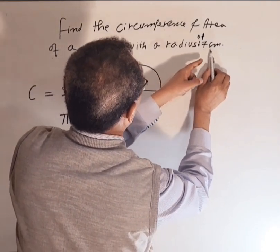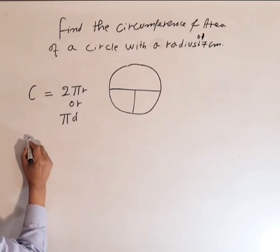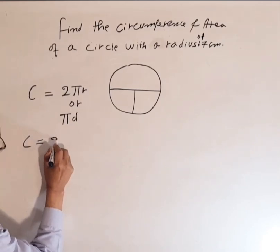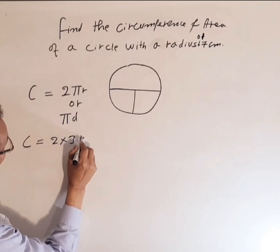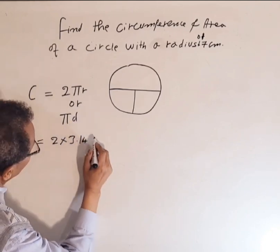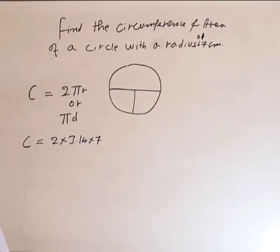So let's do them: C equals 2 times 3.14 times 7. Let's use the calculator.